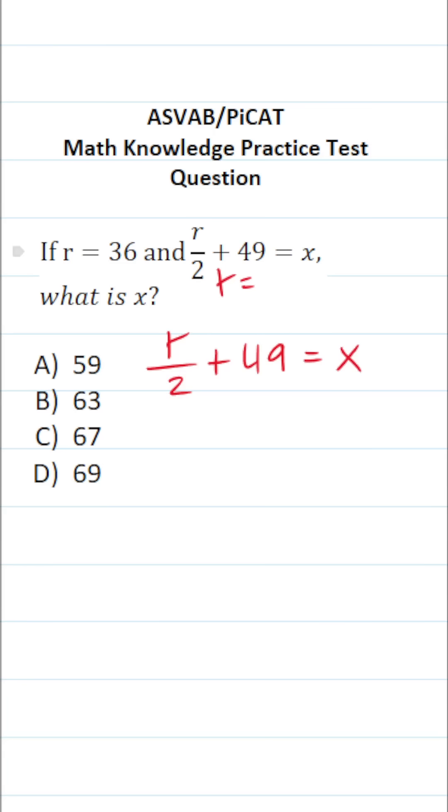In this case we're being asked to solve this equation for x and we know r is 36, so let's go ahead and plug in 36 for r. This becomes 36 divided by 2 plus 49 equals x.